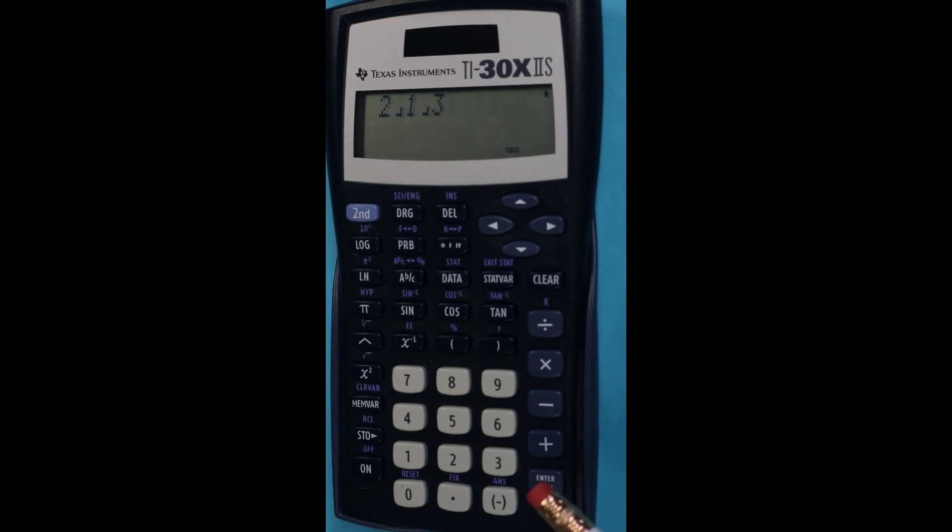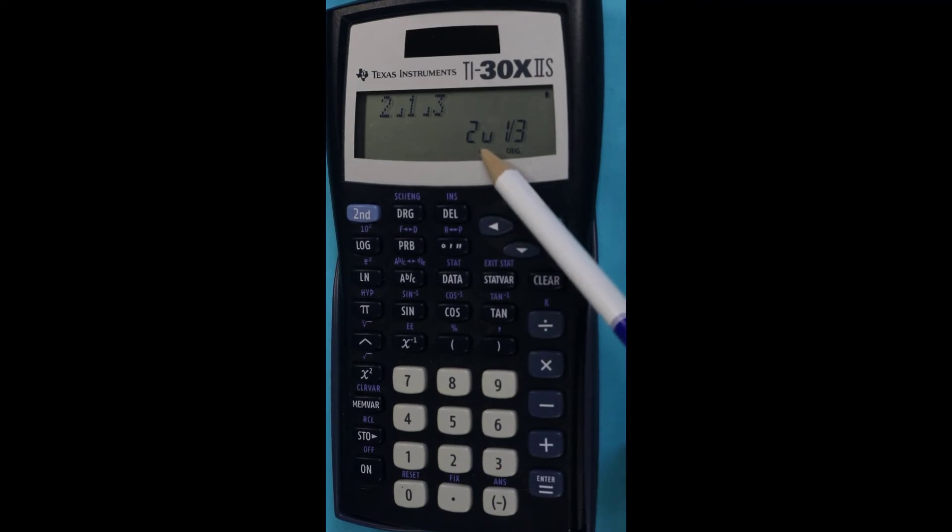And when I press enter or equals, it is going to display it as 2, and this actually represents the union. It's a small U and then you see the fraction 1 over 3. So there's your mixed number form.